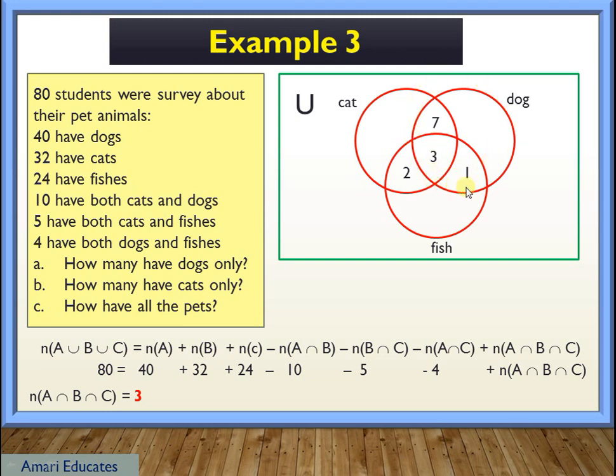Now let's focus on the dog only. For the dogs only, I need 40. So I have 7, 3, and 1, which is 11. So I need here 29 more. For the fish, I have 24 fishes. I have 2 plus 3 plus 1 is 6 and there are 24 here. So I only need 18. And for this one, what do you think is the value? This one for the cats. There are 32 cats. So 7 plus 3 plus 2 is 12. So I only need 20.